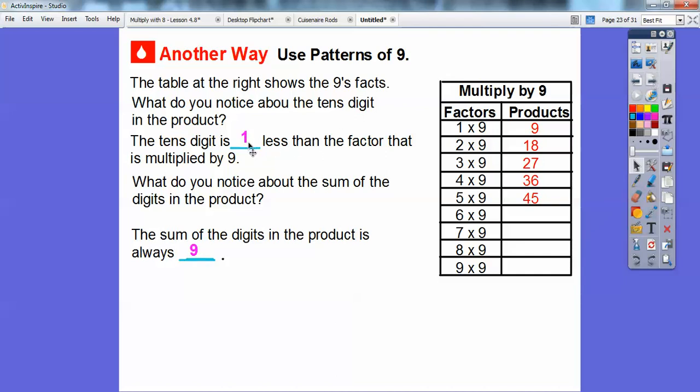So now we know this. We know the tens digit is always one less than the number being multiplied by nine. So let's do this one here. So the tens digit is going to be one less than this number right here. It's going to be five blank. And then the other part is the sum of the digits always add up to nine. So five plus what equals nine? Five plus four equals nine. So six times nine would be 54. That's pretty slick. I love that one right there.